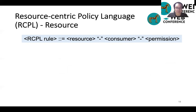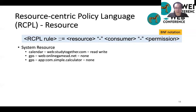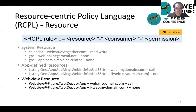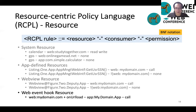Next, let me introduce our formal resource-centric policy language, RCPL, which is used to establish resource access control policies in our system. It is described using BNF notation. The rule is composed of three parts: resource, consumer, and permission. For system resources, the calendar and GPS are the system resources, followed by either a web consumer or an app consumer, and then the granted permission. For app-defined resources, the resource is in the form of app name with app-defined Java object methods. For WebView instance resources, it specifies WebView with the corresponding application name. For Web Event Hook resources, the resource is the combination of web server domain plus the name of the Web Event Hook.